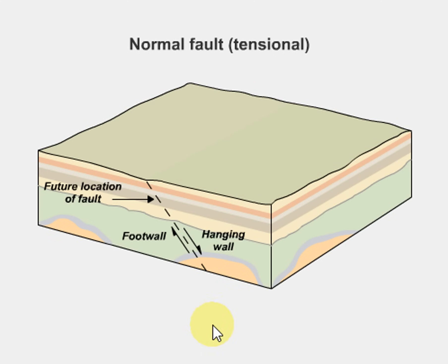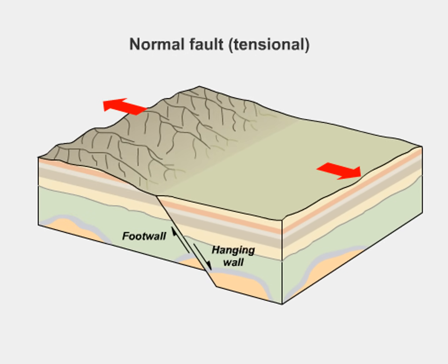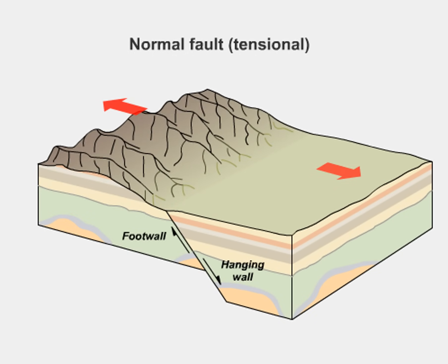A fault develops where a rock structure is broken and forcibly displaced. The movement along a fault may be vertical, horizontal, or a combination of both. A normal fault develops from tensional stress, the stress that results when a landscape is rifting or pulling apart.